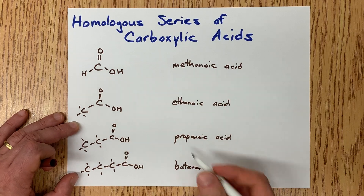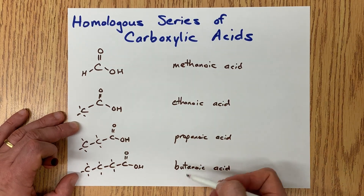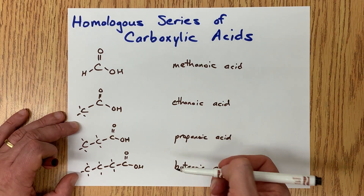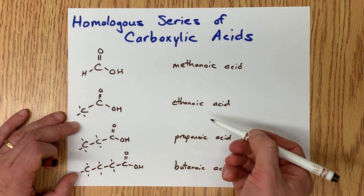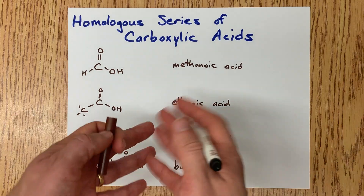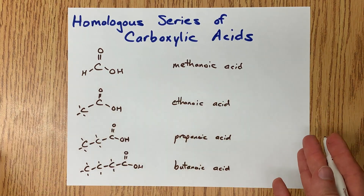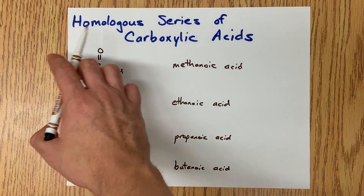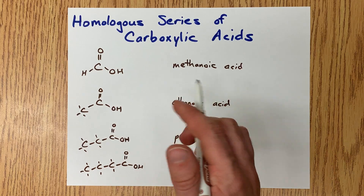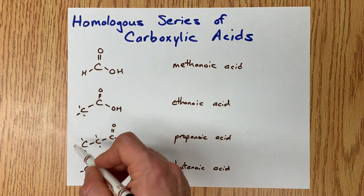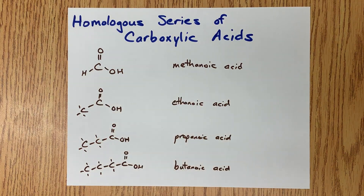And this continues for pentanoic acid, hexanoic, heptanoic, octanoic, nonanoic, decanoic, until infinity. They're all members of a homologous series because you keep adding an extra carbon to the chain.